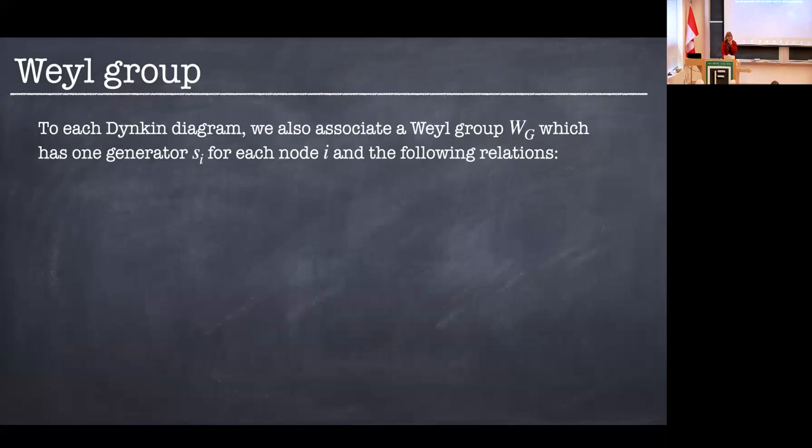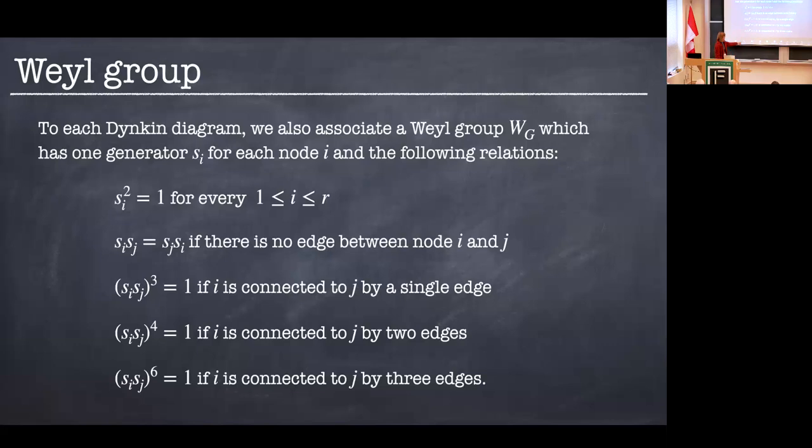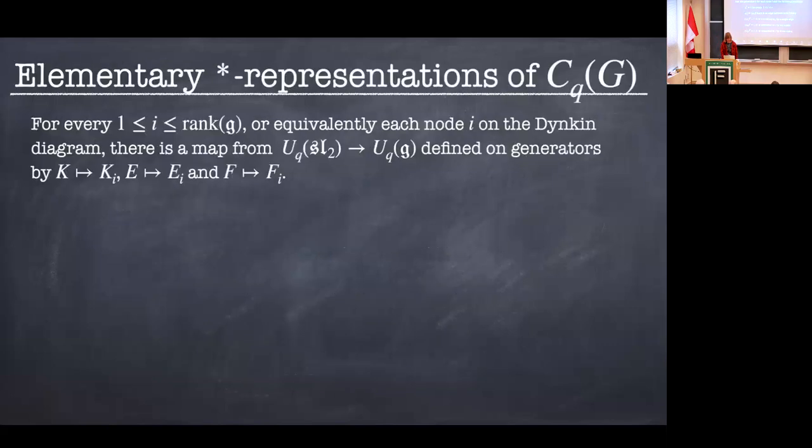So the other nice thing about the Dynkin diagram is that you can read off the Weyl group of G. How does one do that? You take a generator, s_i, for each node i, and the following relations. So every s_i is idempotent. s_i and s_j commute if there's nothing joining them in the Dynkin diagram. If it's connected by a single edge, we have that (s_i s_j)^3 is equal to one. If it's connected by two, then it's (s_i s_j)^4 is equal to one. And if it's connected by three, then our exponent here is six.